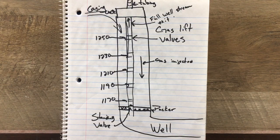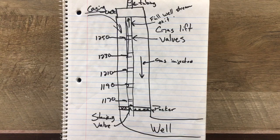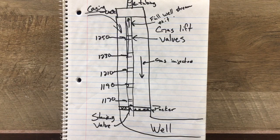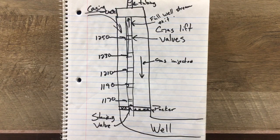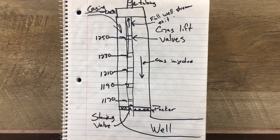We used to have a lot of gas lift in the Eagle Ford, and I'm fairly certain it's common up north as well. Once you start running out of gas, you'd bring in pumping units — rod pumps. Anyway, this is gas lift in a nutshell. I kept it pretty short but I can go into more detail if needed. I think you get the gist — until next time, thanks.